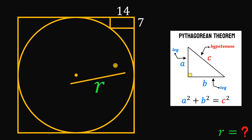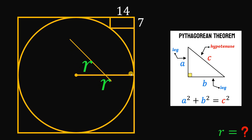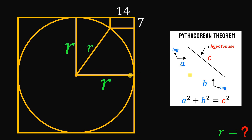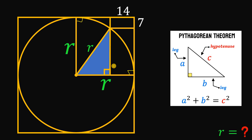Let's draw the radius to these important points. All of these lengths must be equal to the radius of the circle. Also take note that the radius must be perpendicular to the tangent line. From here, let's drop a perpendicular segment — and there we have our right triangle.